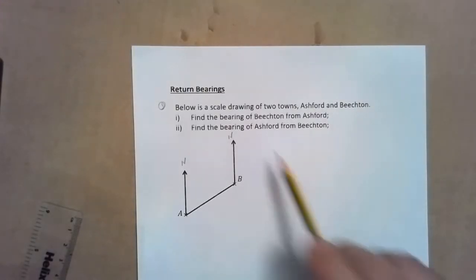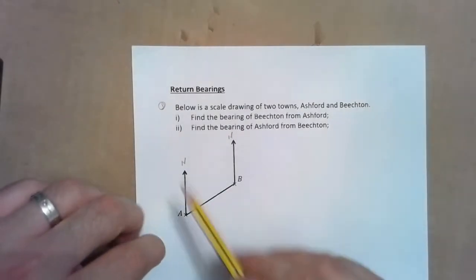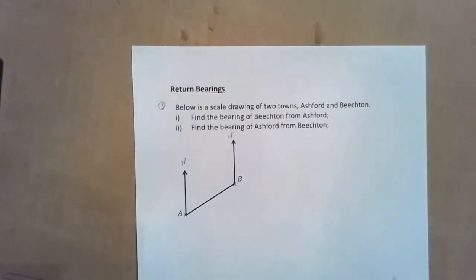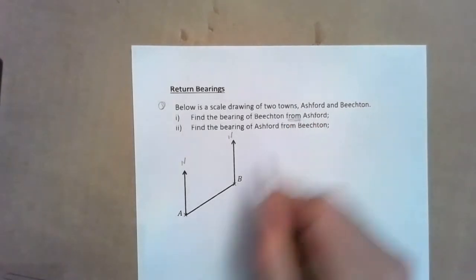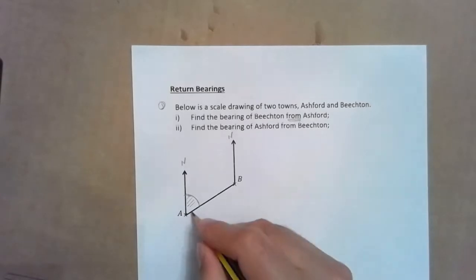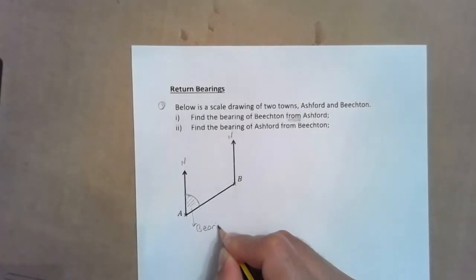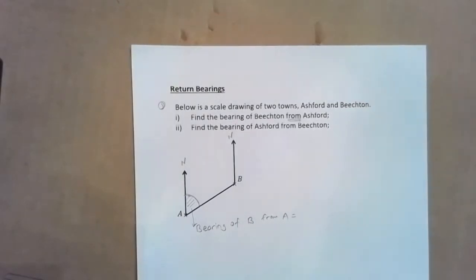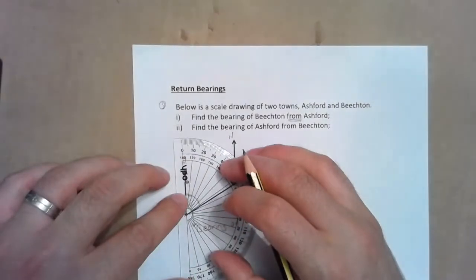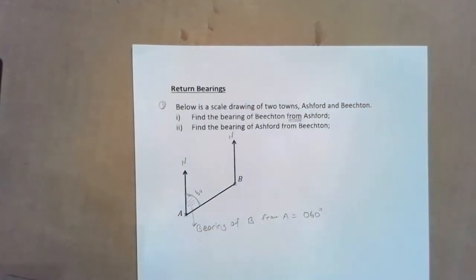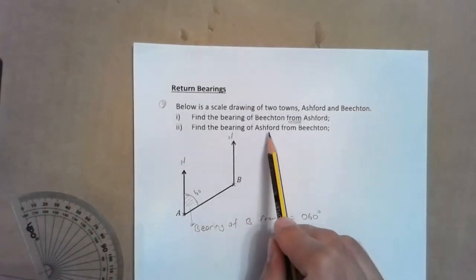Next we're going to talk about return bearings. We've got a scale drawing here of two towns, Ashford and Bilton. We're going to find the bearing of Bilton from Ashford — underline the keyword 'from'. From Ashford, we go north, then clockwise until we get to Bilton. That gives us 60 degrees, so the bearing is 060.